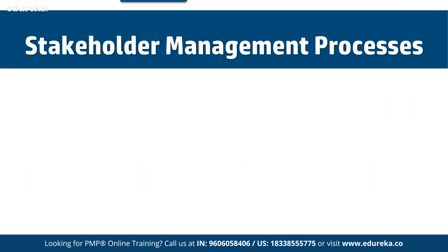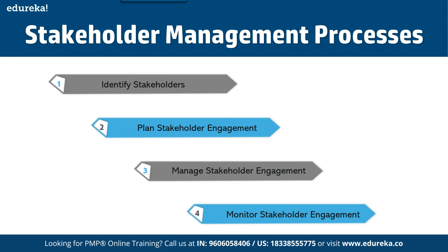Now, the stakeholder management process is divided into four different categories. One is identify stakeholders. Two is plan stakeholder management. Three, once you have onboarded those stakeholders and planned the management, you have to manage that properly using different tools and processes for easy management. The last one is monitoring — keeping an eye that people are following the defined principles, roles, and privileges.